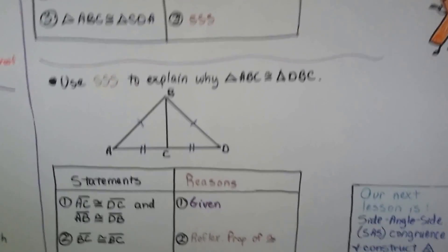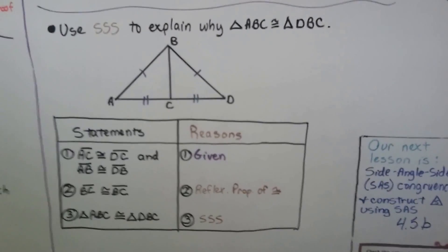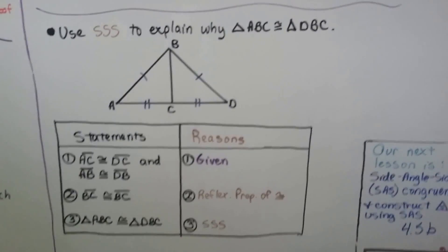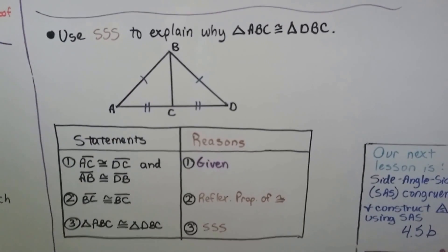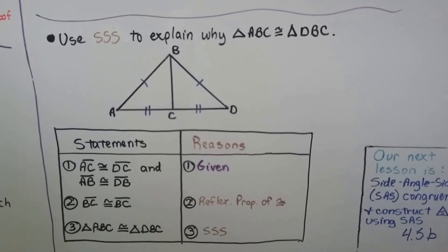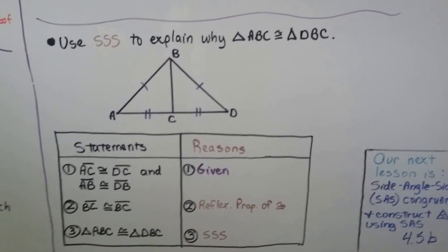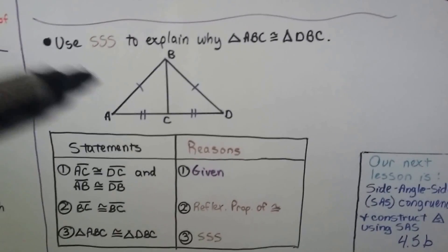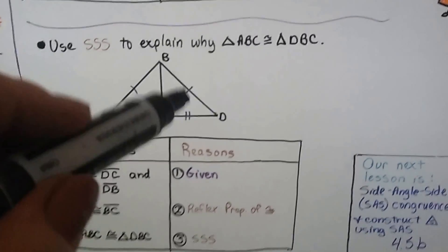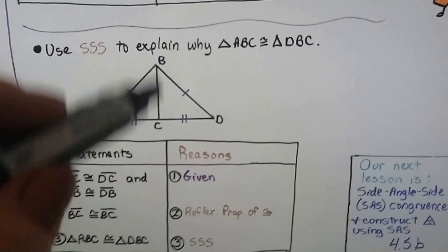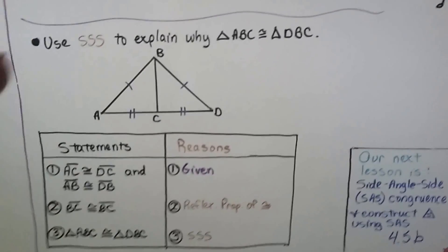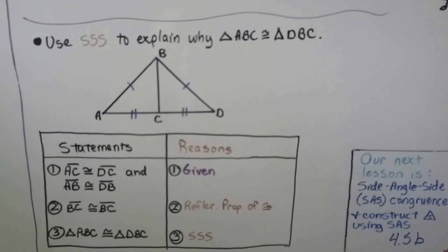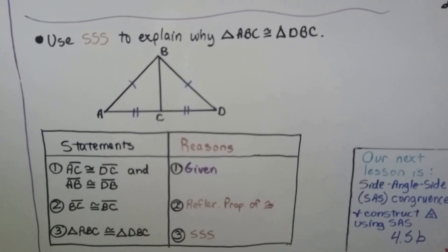Got one last one. We're going to use SSS to explain why triangle ABC is congruent to triangle DBC. This triangle is congruent to this one, and look — they're sharing a line again. So we know we're going to use the reflexive property.